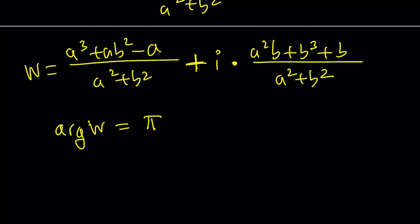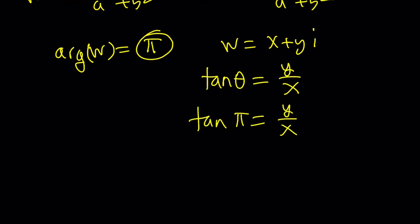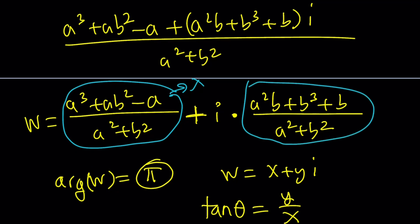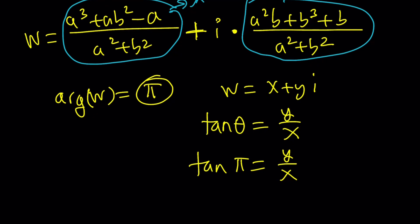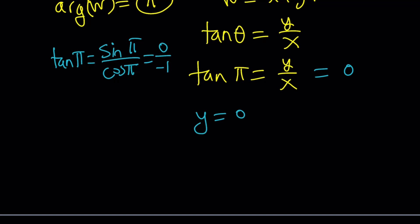Argument of W is pi — what is that supposed to mean? If we write W as X plus YI, then tangent theta equals Y over X, and theta in this case is pi. Note that by X and Y I mean the real and imaginary parts respectively — I can no longer call them A and B since those are already used. So what is tangent pi? Tangent is sine over cosine: sine pi is zero and cosine pi is negative one, so tangent pi is zero, which means Y over X equals zero, which means Y equals zero.